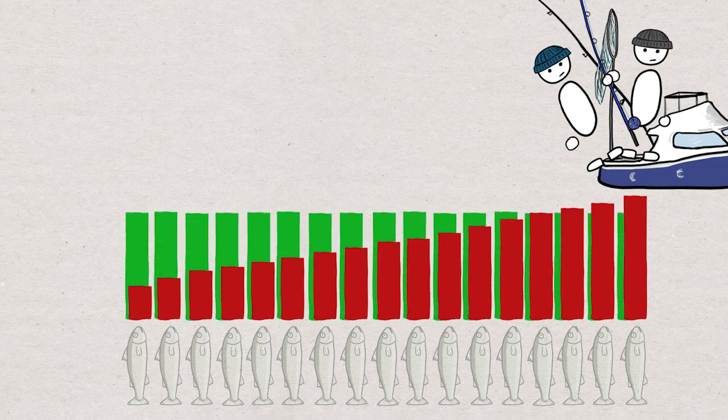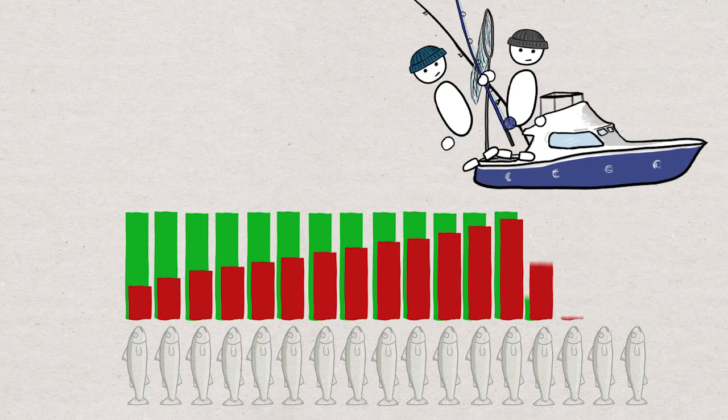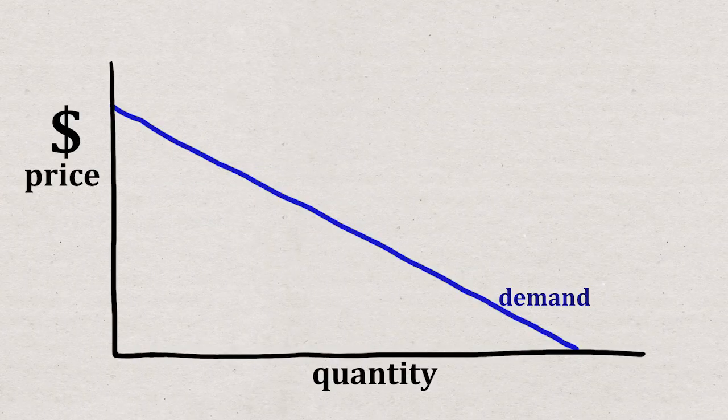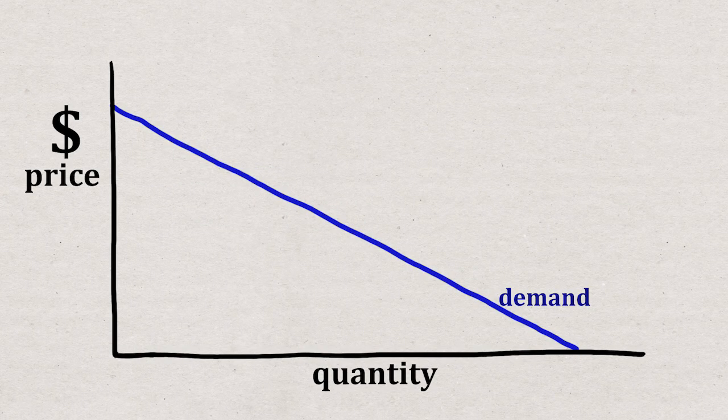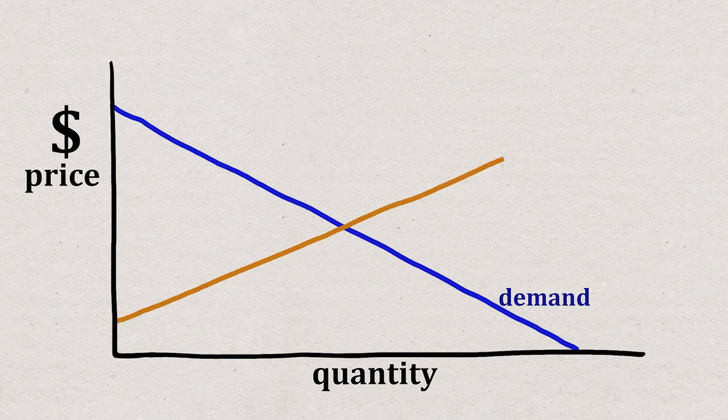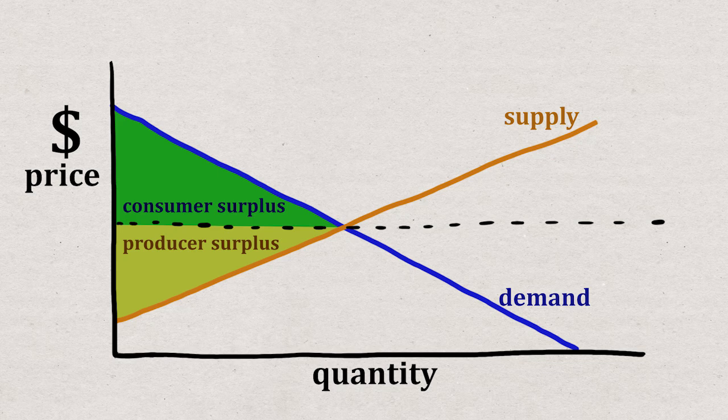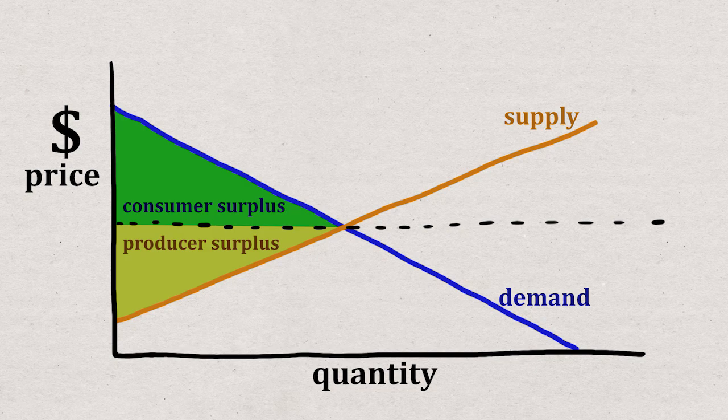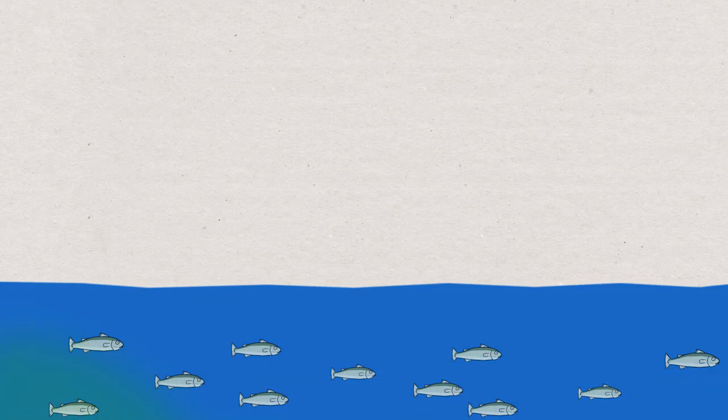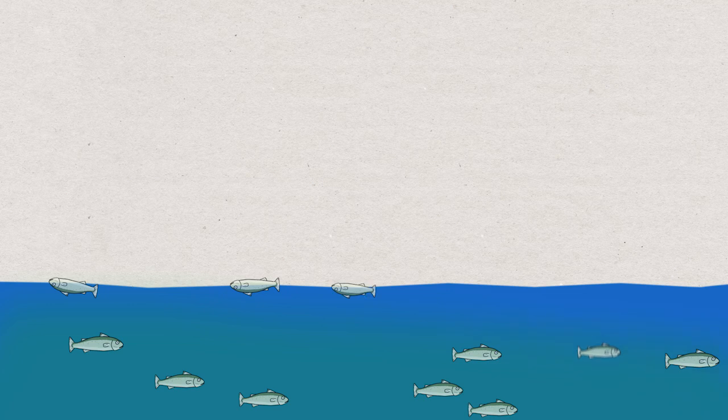If the money they would make is below what it would cost, they won't supply, at least in the long term. It's the same for all the producers. And their cumulative supply function might look something like this. This area is their costs and this is their producer surplus. Consumer and producer surplus added together would give the total economic surplus. It's all the value the producers and consumers get from the goods, minus all the costs and work they had to put in.